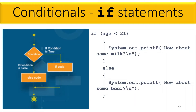Conditionals — if statements. Using the flowchart, the diamond symbol represents a condition. If the condition is true, the if-block code will be performed; if the condition yields false, the else-block code will be performed. Only one of the two code blocks will execute.